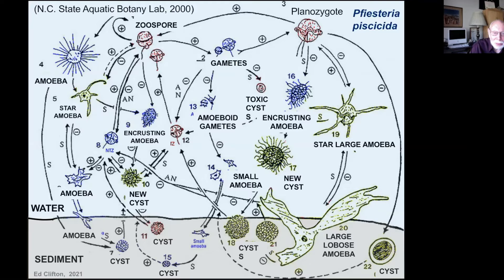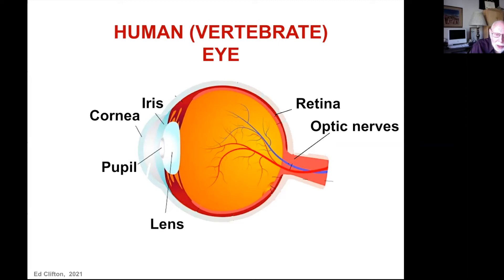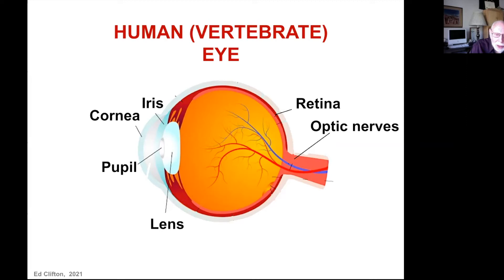One of the amazing things about dinoflagellates is that one family has something that looks very much like eyes. Our eyes are complex structures made of tissue forming iris, pupil, cornea, lens, and retina to create an image. Well, this family of dinoflagellates has something very much like a cornea, lens, and retina — and the amazing thing is this is all in a single-celled organism. I'm just blown away by this.